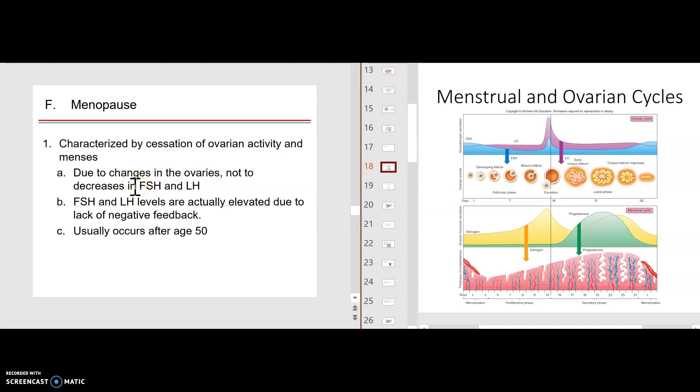So the ovary starts giving out. So actually, FSH and LH, based upon the negative feedback aspect, actually start to elevate. They start to elevate because you're not having the negative feedback from the estrogen progesterone. And this generally occurs around the age of 50, but different women have different times.